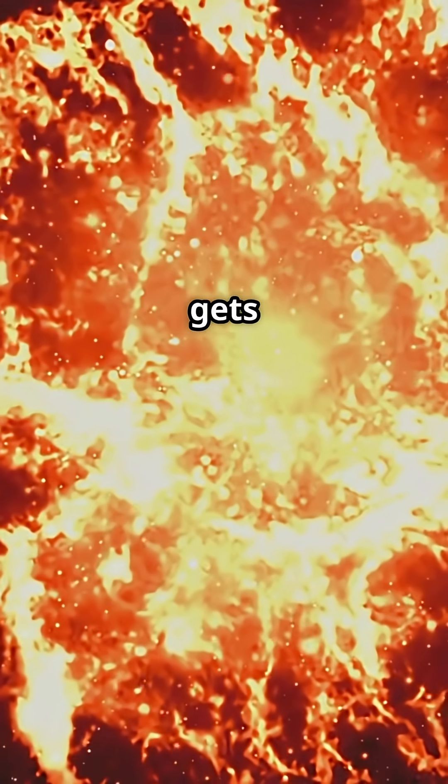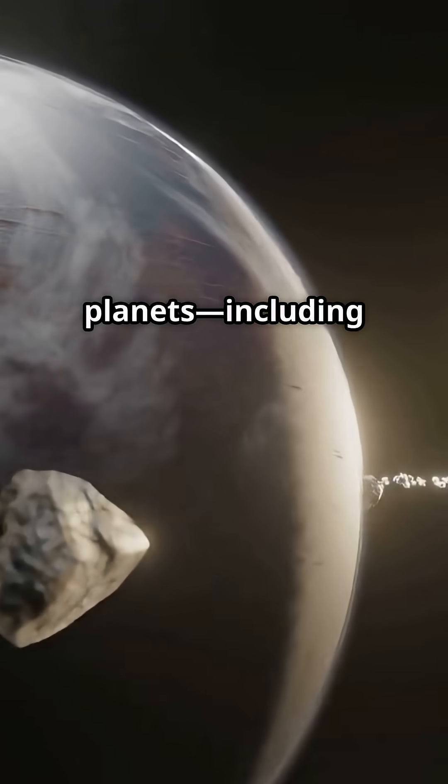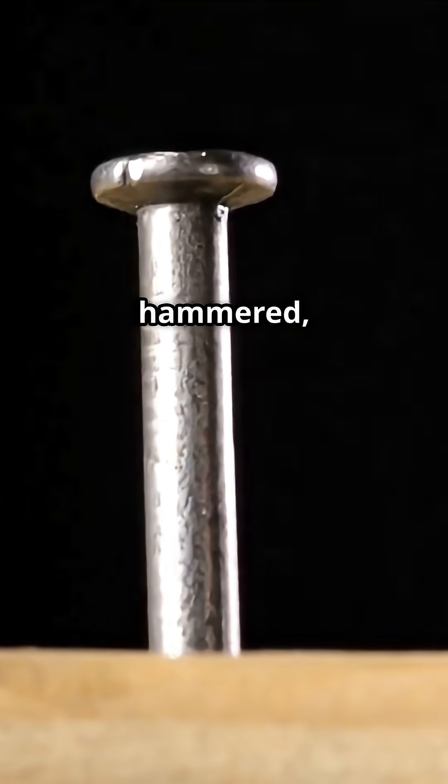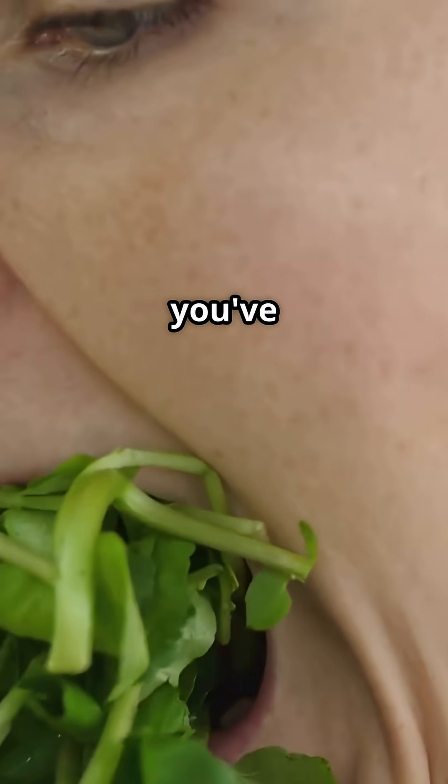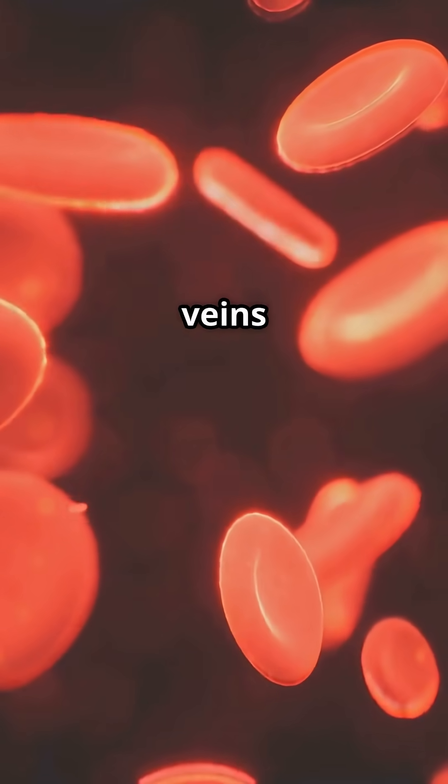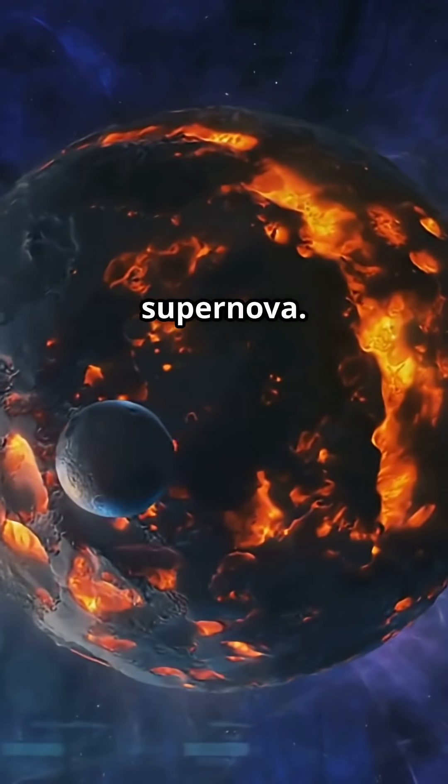All that iron gets blasted across the universe, seeding newborn planets, including ours. That means every iron nail you've ever hammered, every bite of spinach you've ever eaten, and the hemoglobin carrying oxygen in your veins, all forged in the nuclear furnace of a supernova. Basically, you're part stardust.